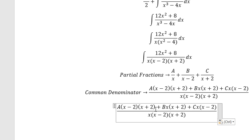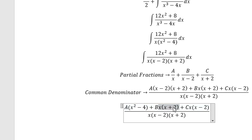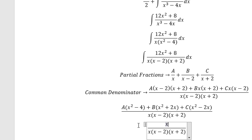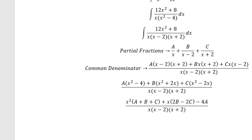Now we need to expand. Next, we arrange based on the terms of x. For x squared, we have A plus B plus C. For x, we have 2B minus 2C. For the constant numbers, we have negative 4A. So we need to compare coefficients.